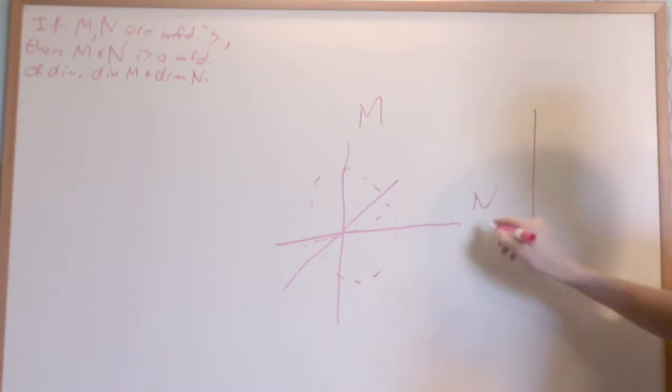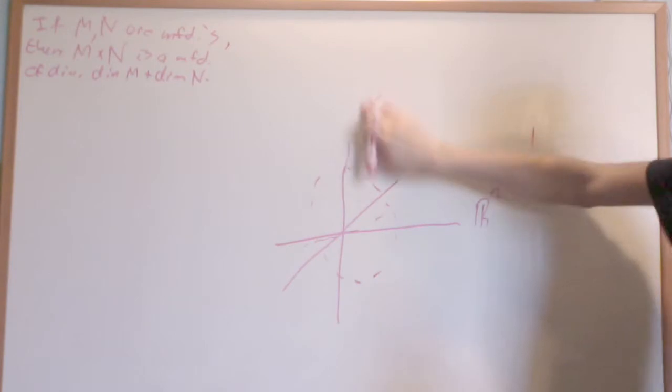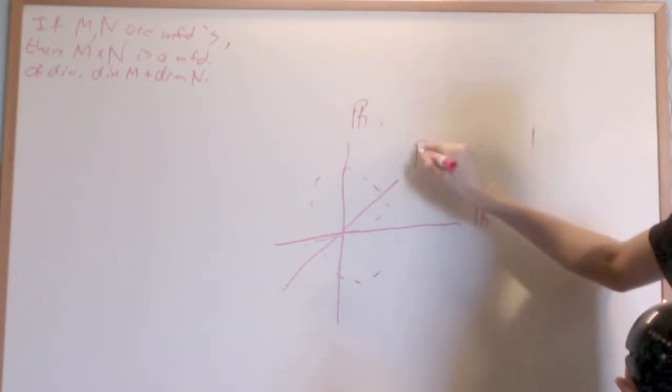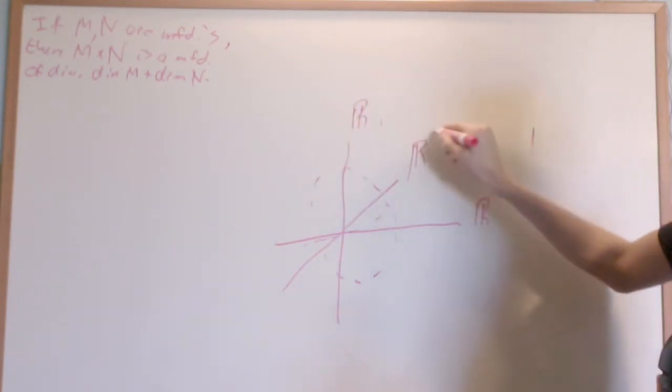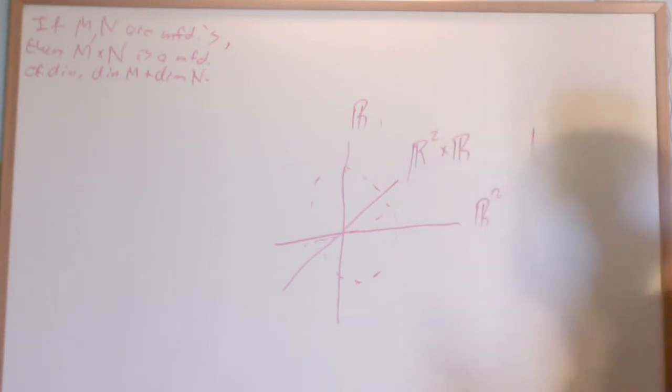For example, if this is R2 and this M is R, their product R2 cross R is a manifold of dimension 3, and in fact it's just equivalent to R3.